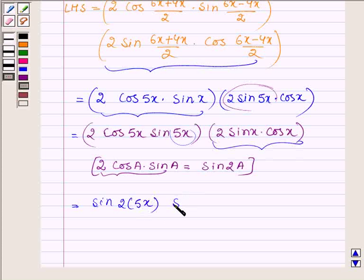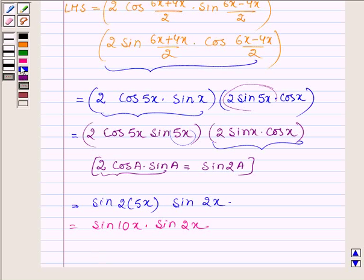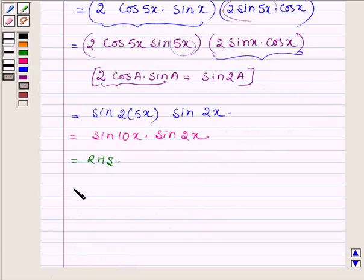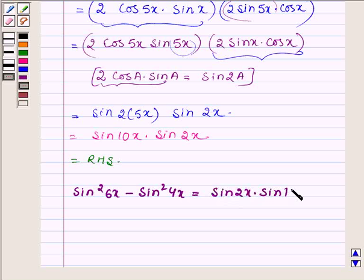Now here A is 5x, so it can be written as sin(2·5x), and this bracket can be written as sin(2x). Which is equal to sin10x·sin2x, which is the right hand side. And hence we can say that sin²6x - sin²4x = sin2x·sin10x. Hence proved.